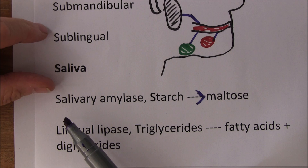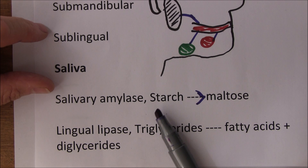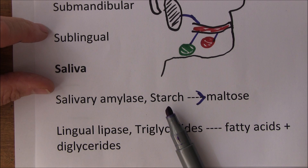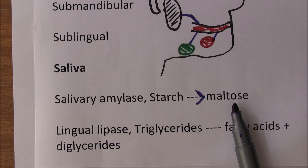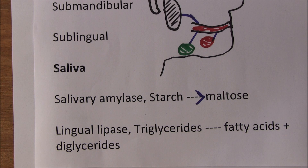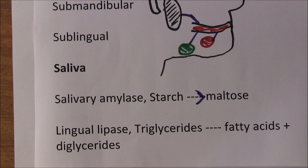You can test this yourself: put some bread in your mouth, chew it, and swill it around without swallowing. The salivary amylase will progressively break the starch down into maltose. Starch doesn't taste sweet, whereas maltose does, so the food will start to taste sweeter the longer you leave it in your mouth as the salivary amylase works.